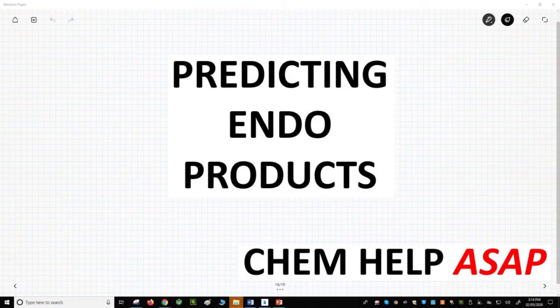Good day from ChemHelp ASAP. Let's learn some steps that will allow us to predict the major diastereomer formed in a Diels-Alder reaction.